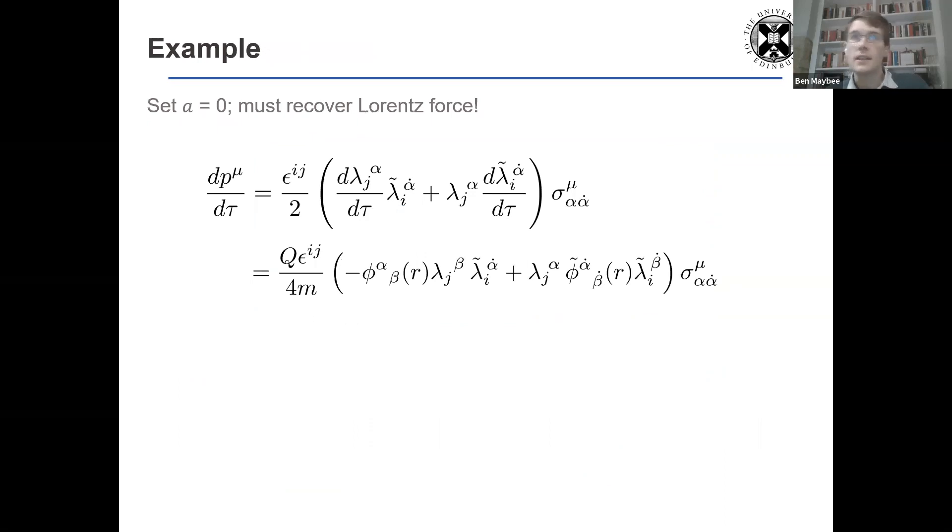Okay, so let's look at a specific example to convince you this isn't just nuts. So we're going to set A, the Newman-Janis shift, to zero. Then we'd better get the Lorentz force out. So we're going to get the Lorentz force from spinors. So I've just substituted the equation of motion from the previous slide.